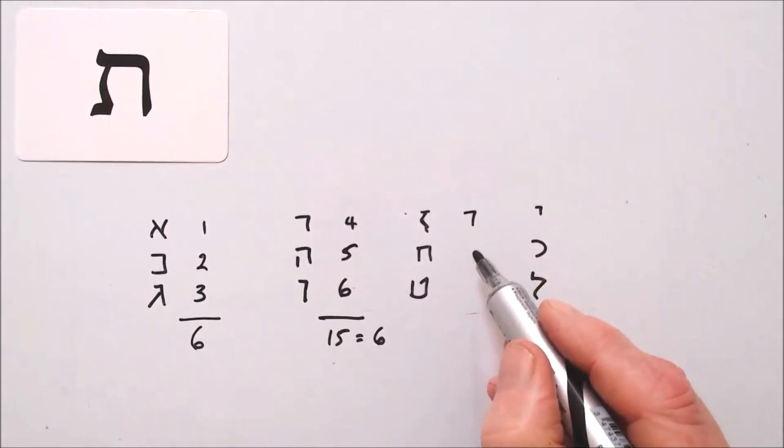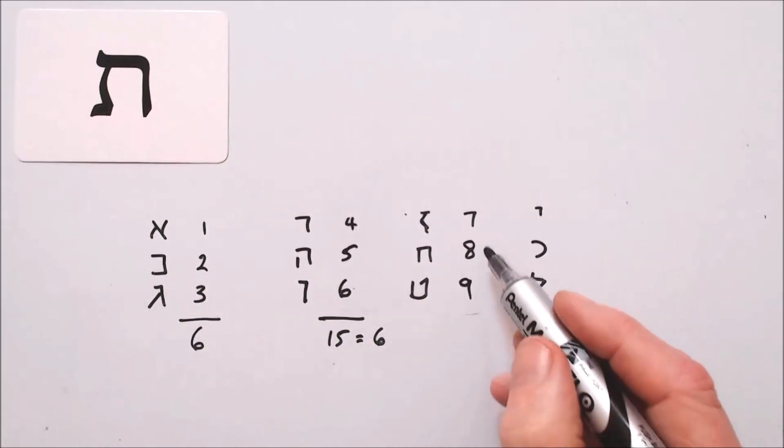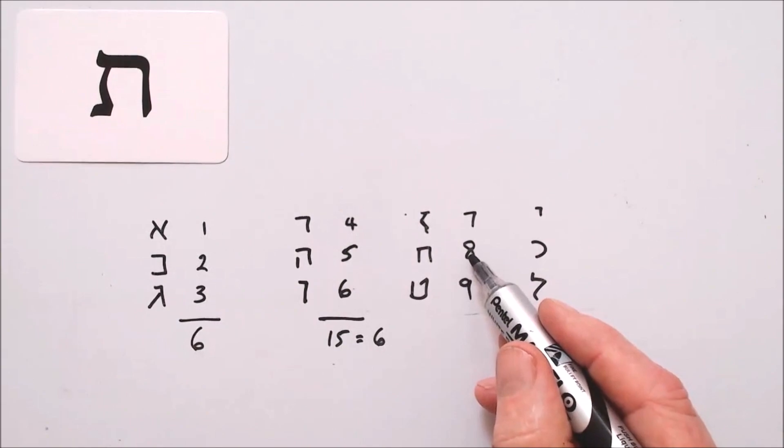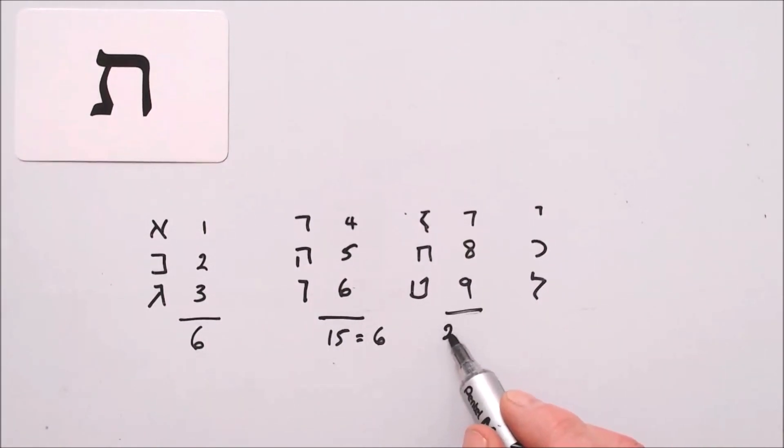Zion is seven, Chet is eight, Tet is nine. Seven plus eight is fifteen, plus nine is twenty-four. Get the digit sum. Add two and four equals six.